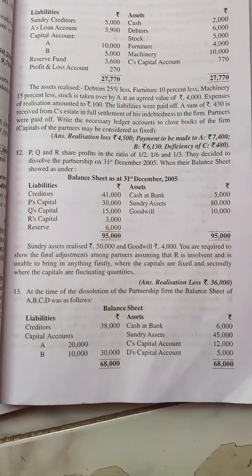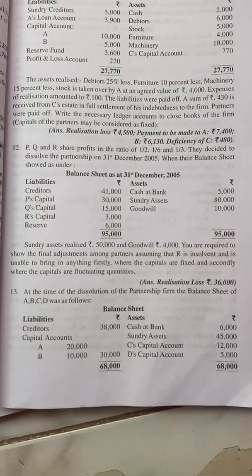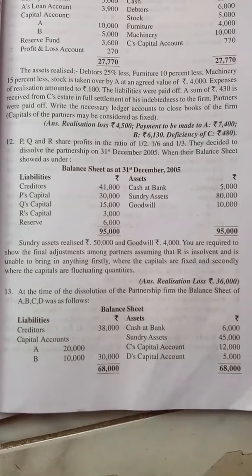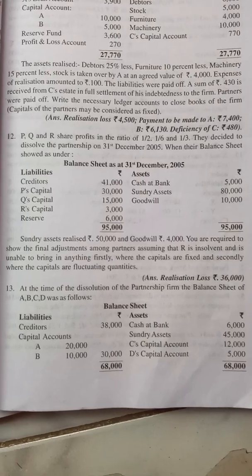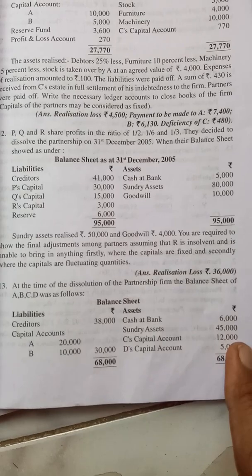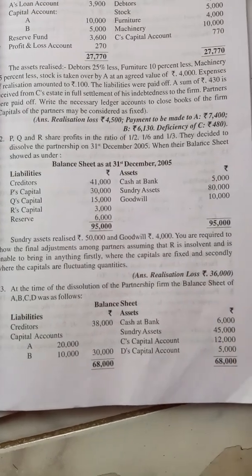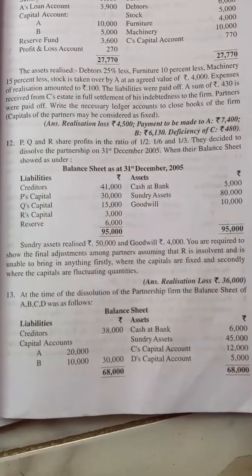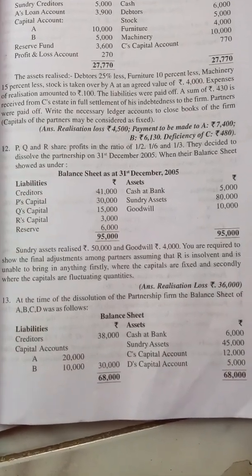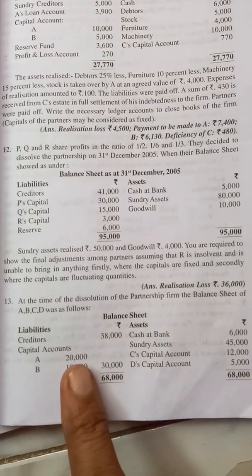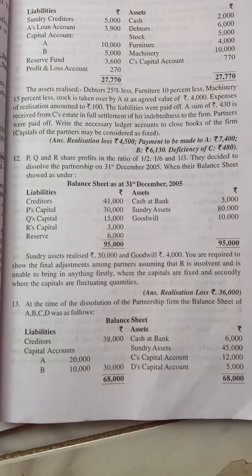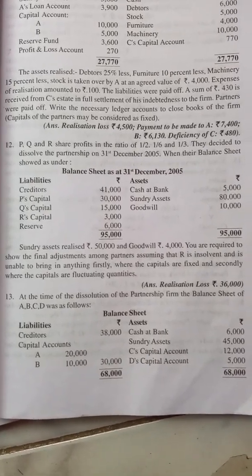Hi dear students, in insolvency of partner, let us do problem 13 from the reader — a student asked me to do this. There are four partners; actually two partners are having debit balance. In case of realization loss, if the partner having debit balance is not having sufficient funds, the remaining partners have to bear the loss of the insolvent partner.